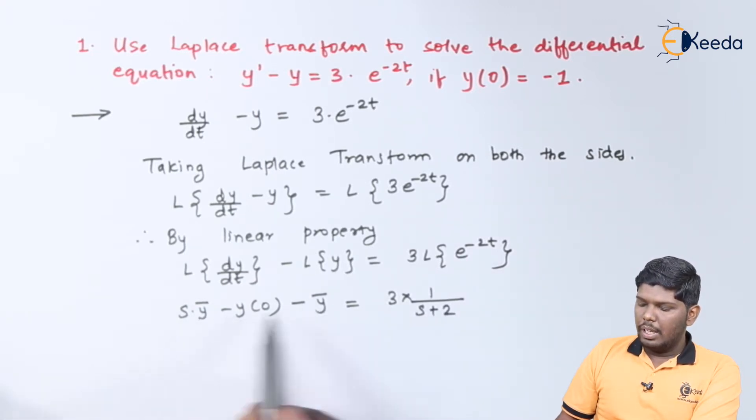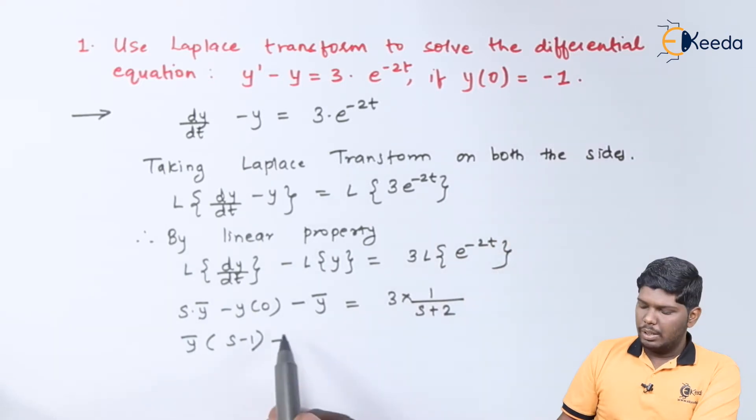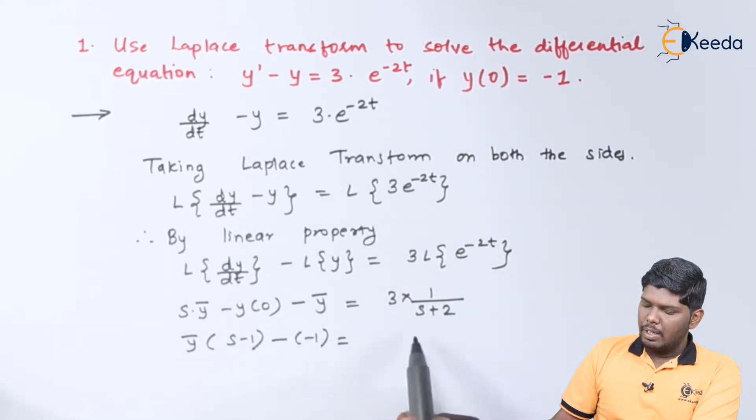On further solving, here we can take y bar common. We will get s minus 1 and y of 0, it is already given as minus 1. Here we have 3 upon s plus 2.